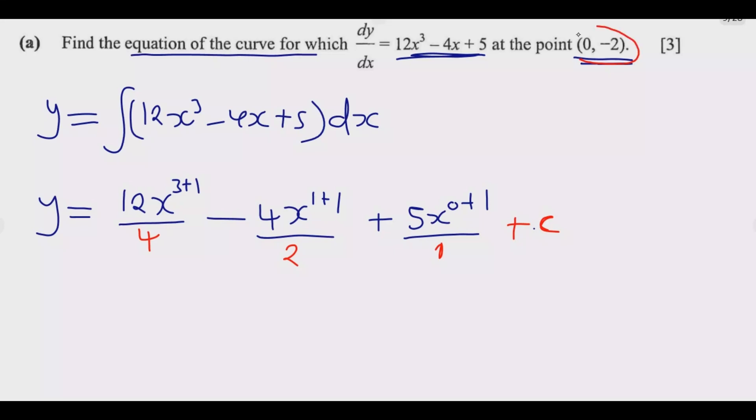So this C we are going to find it using the coordinates that have been given. That's the importance of those coordinates. So at this point, we have y equals... 4 into 12 we say 3, then x⁴, then minus 2x², then 5x, then plus C.